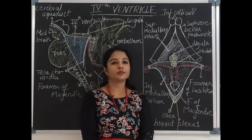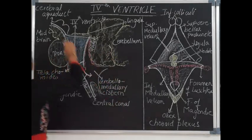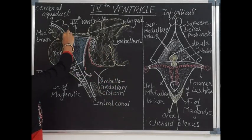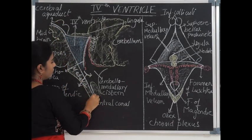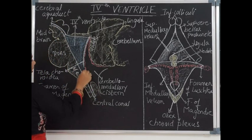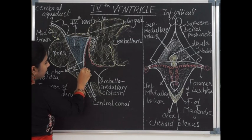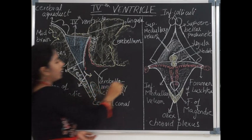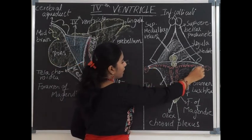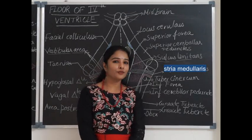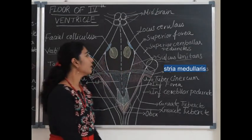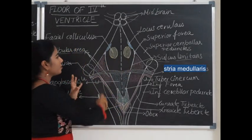There are five openings in the fourth ventricle: the cerebral aqueduct of the midbrain, the central canal of the spinal cord below, the foramen of Magendie dorsomedially and inferiorly, and the foramen of Luschka on either side.